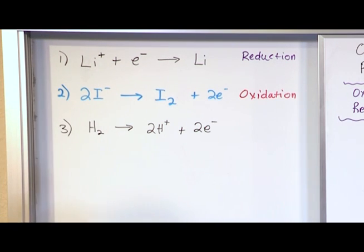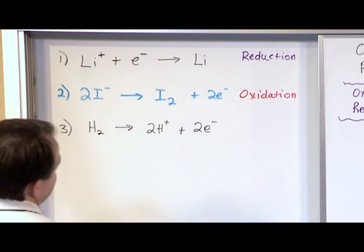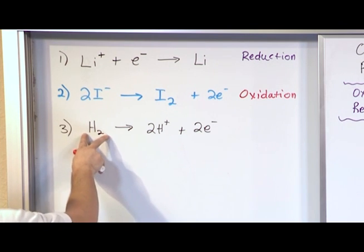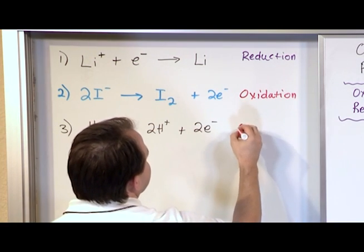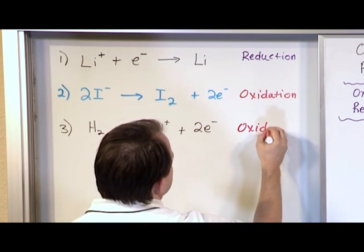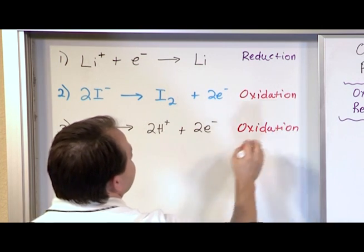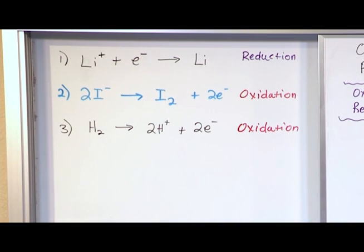But is this an oxidation process or a reduction process? And if you look at it, the original species we have is electrons are leaving the scene of the crime, changing it into something else. So they're off going on to something else, so this is oxidation. It's an oxidation process because this hydrogen atom is losing electrons.